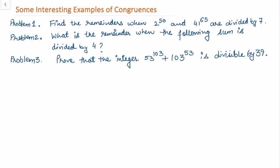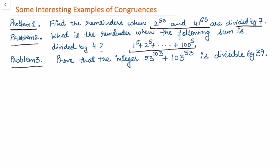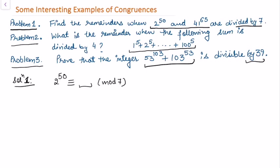In this video I want to solve some interesting examples of congruences. I have considered three problems. The first problem asks: find the remainders when 2 to the power 50 and 41 to the power 65 are divided by 7. The second problem asks: what is the remainder when the sum is divided by 4. The third problem asks: prove that this integer is divisible by 39. All are quite similar because we are asking about divisibility or the remainder.